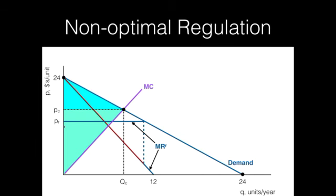So what does this regulated monopoly do? It sets output where marginal cost equals marginal revenue. Marginal cost intersects marginal revenue at a point that gives us the regulated output level, and we can see that this output level is lower than it would be in a perfectly competitive marketplace. So even though the intention was to make consumers better off by lowering the regulated price below the optimal amount, the result is actually deadweight loss — this triangle here and this triangle here — due to underproduction relative to the perfectly competitive output level.